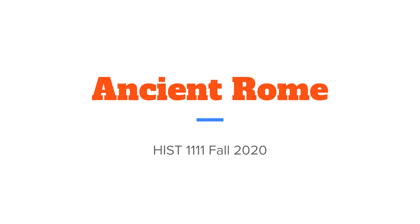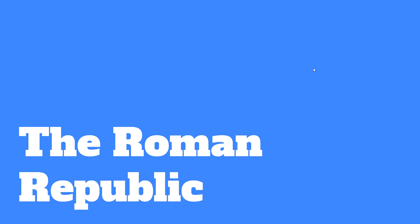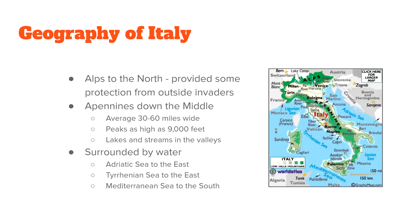We're talking about ancient Rome. This is going to be about 20 to 25 slides long — really two lectures put into one. Normally in a face-to-face class we would go over ancient Rome in two different classes. It's broken into two parts: the Roman Republic and the Roman Empire, and the Roman Republic came first.